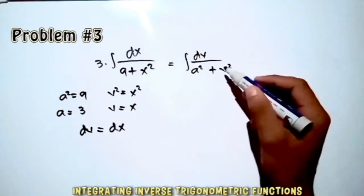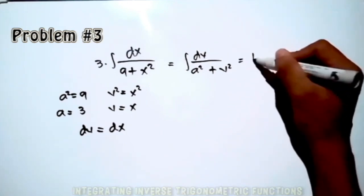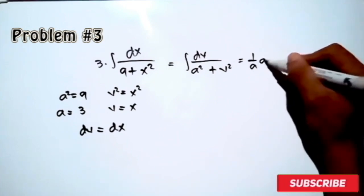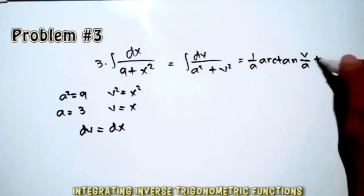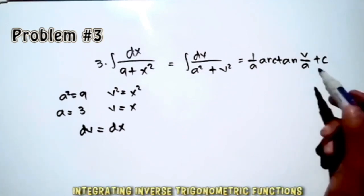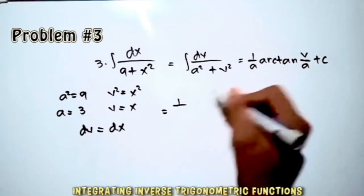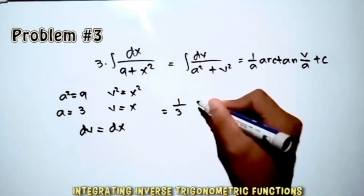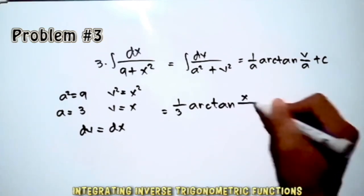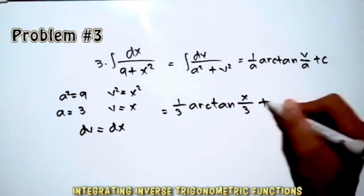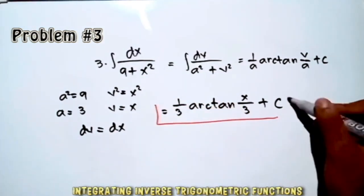This matches the arctan formula, so it equals (1/a) arctan(v/a) + C. Since v = x and a = 3, our final answer is (1/3) arctan(x/3) + C.